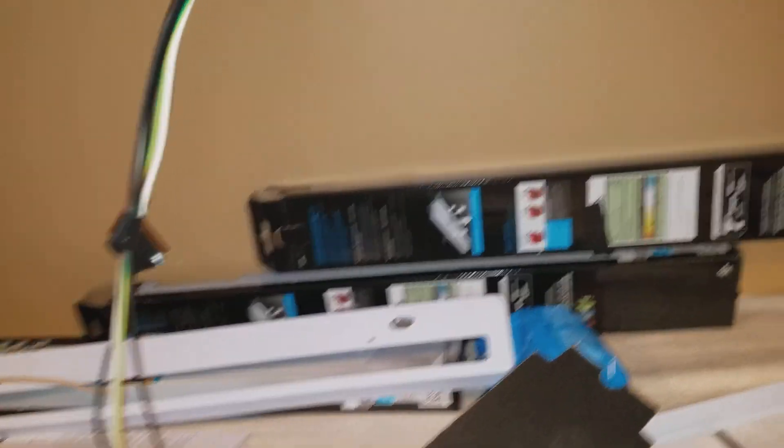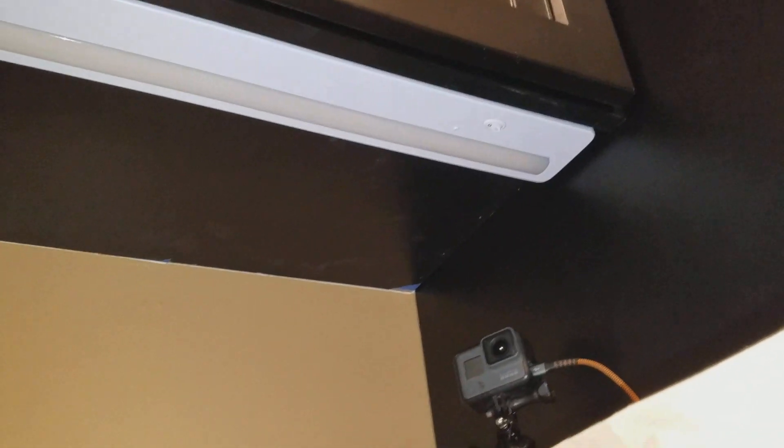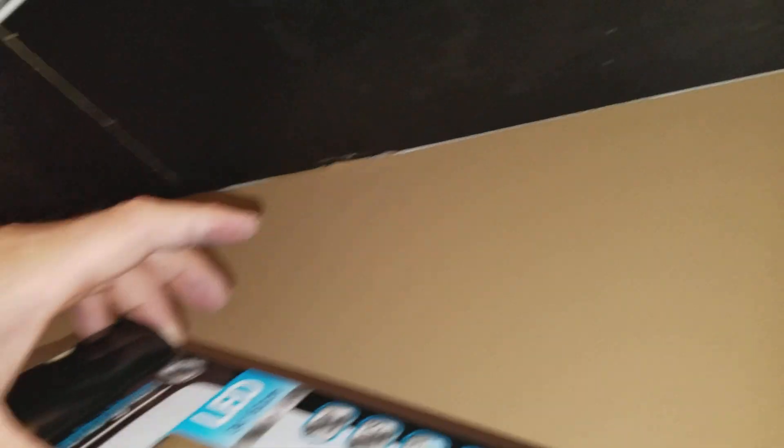Okay, I'm going to show you how to install countertop lighting that mounts under your upper cabinets. So these are the lights that we are installing. These particular lights are made by General Electric at a factory somewhere in China, in Brighton, is what they're called.